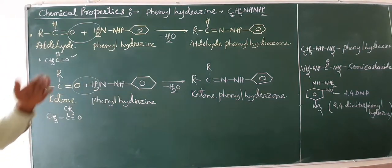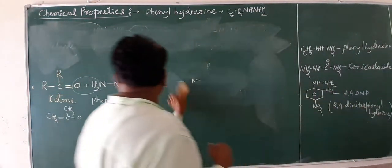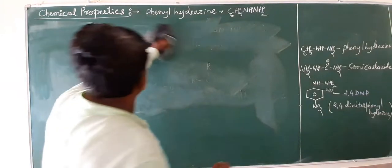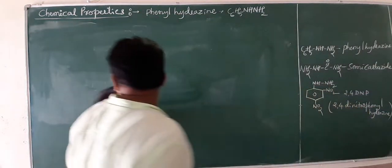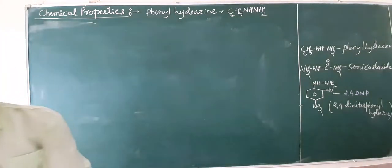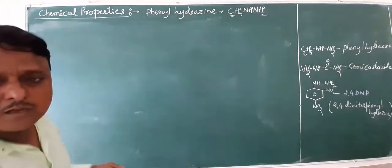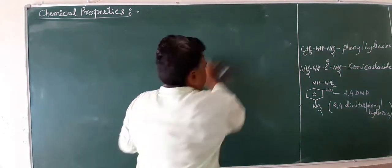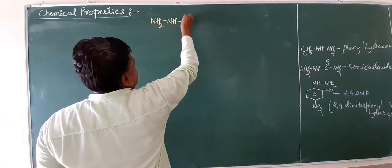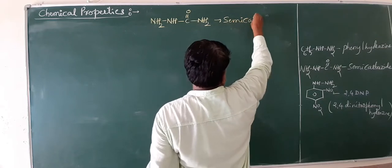After this reaction, we want the next important reaction as mentioned in our syllabus — that is semi-carbazine. Semi-carbazine is a very important condensation reaction, especially for competitive exams. The formula of semi-carbazine is NH2-NH-C(=O)-NH2.